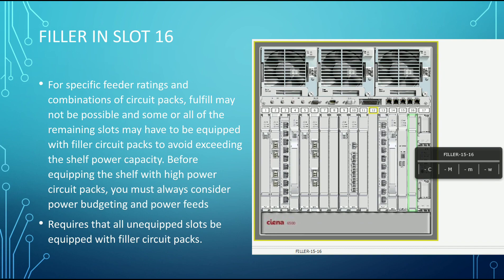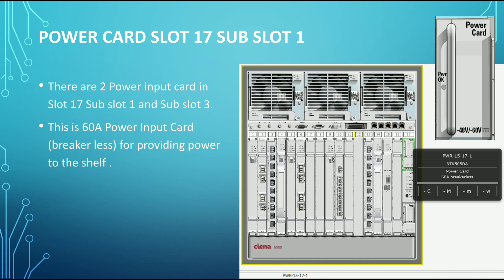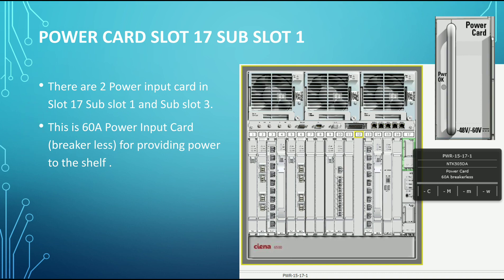Slot 16 also has a filler. Moving to slot 17, the power card is in sub-slot 1. This is a 16-ampere power input card providing power to the shelf. There are two power input cards: one in sub-slot 17-1 and one in sub-slot 17-3.